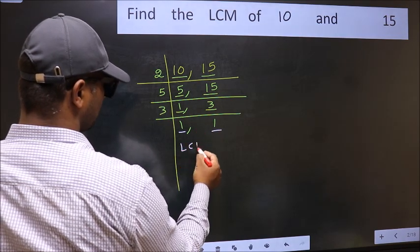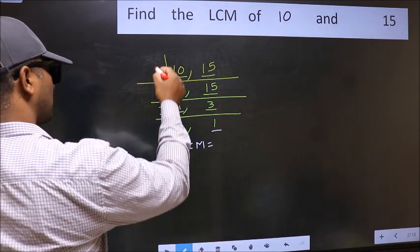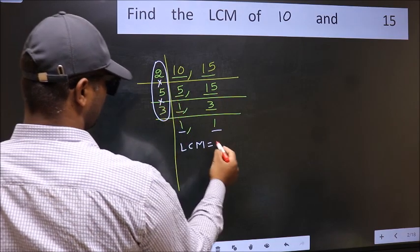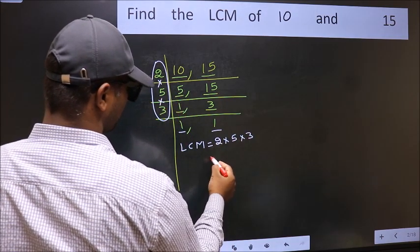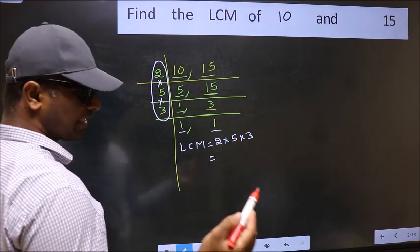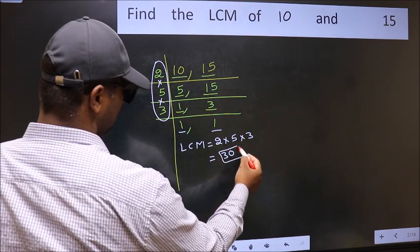So our LCM is the product of these numbers, that is 2 into 5 into 3. When we multiply these numbers, we get 30 as our LCM.